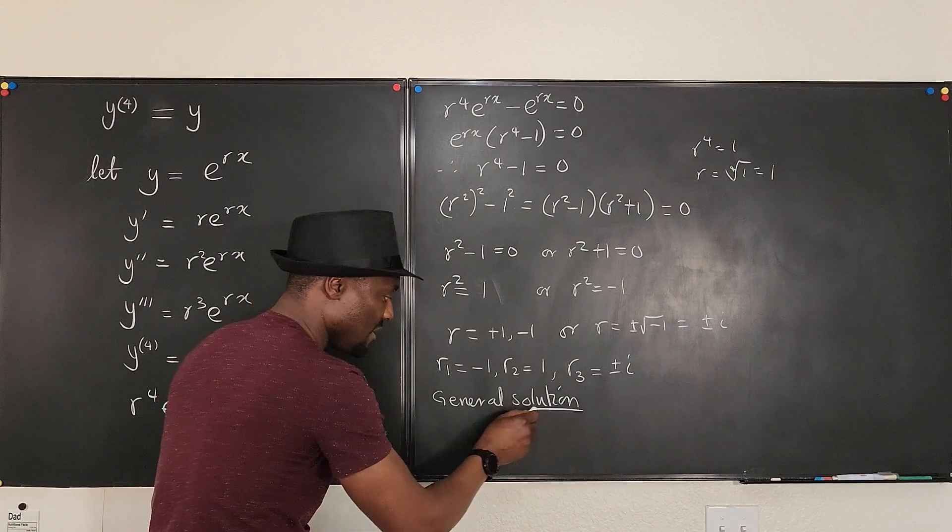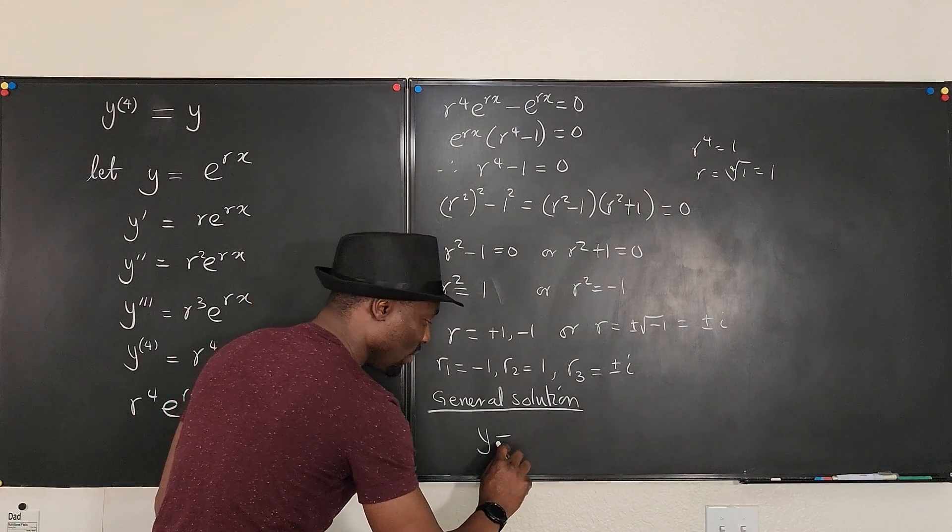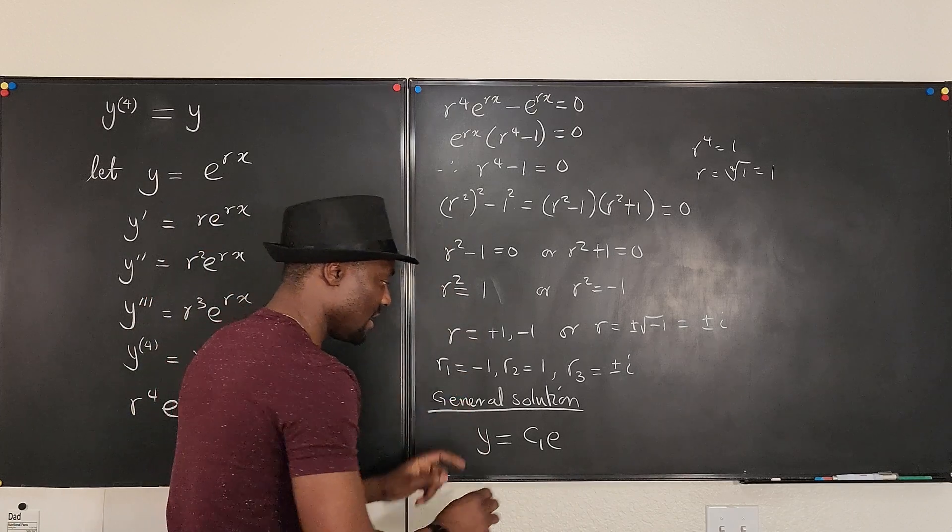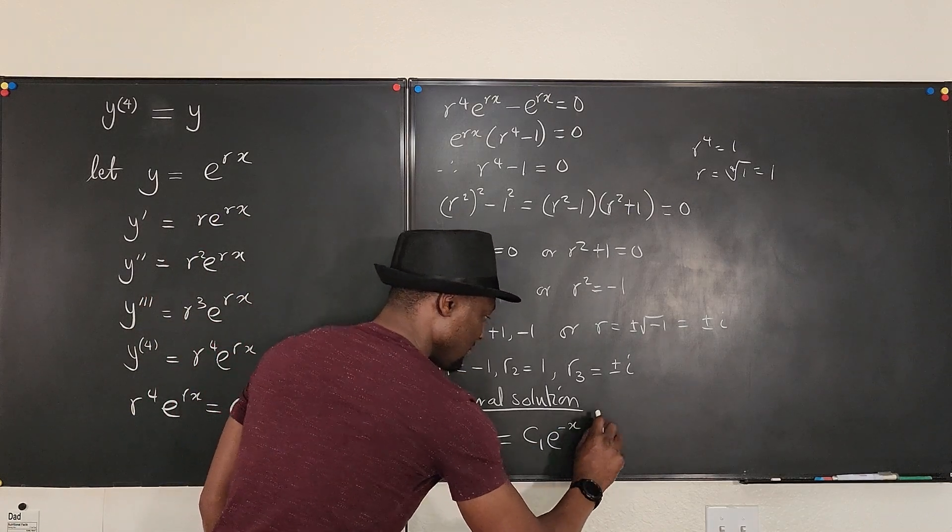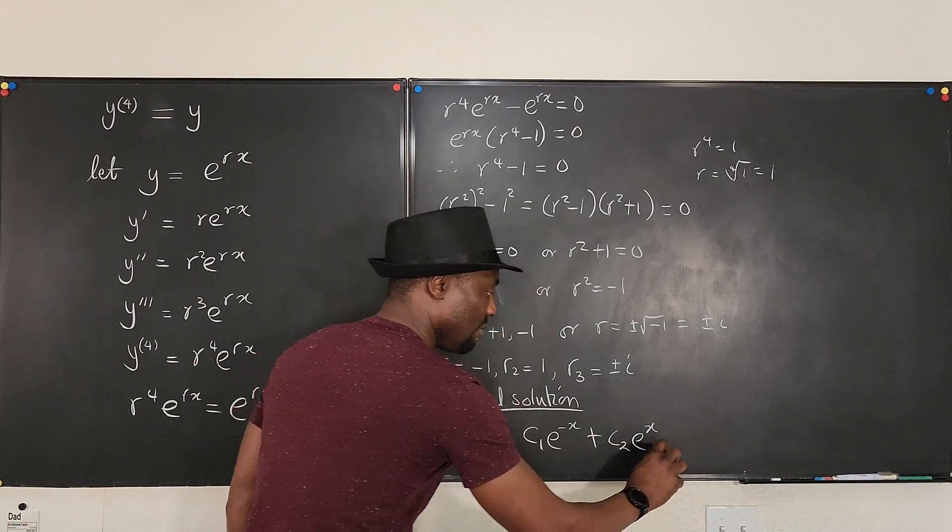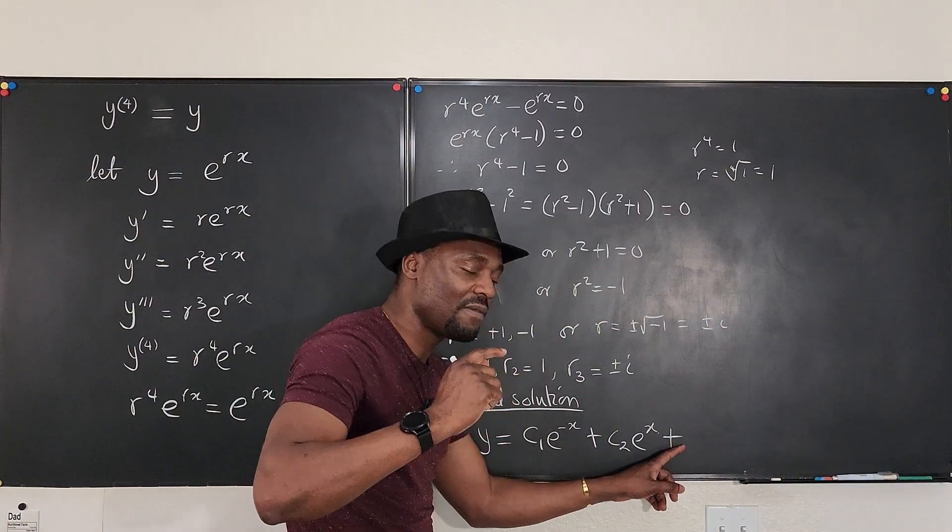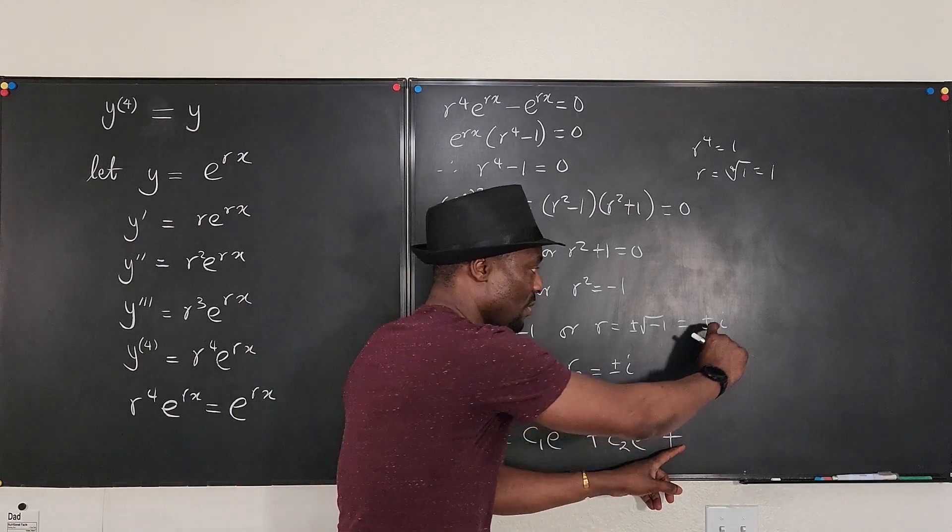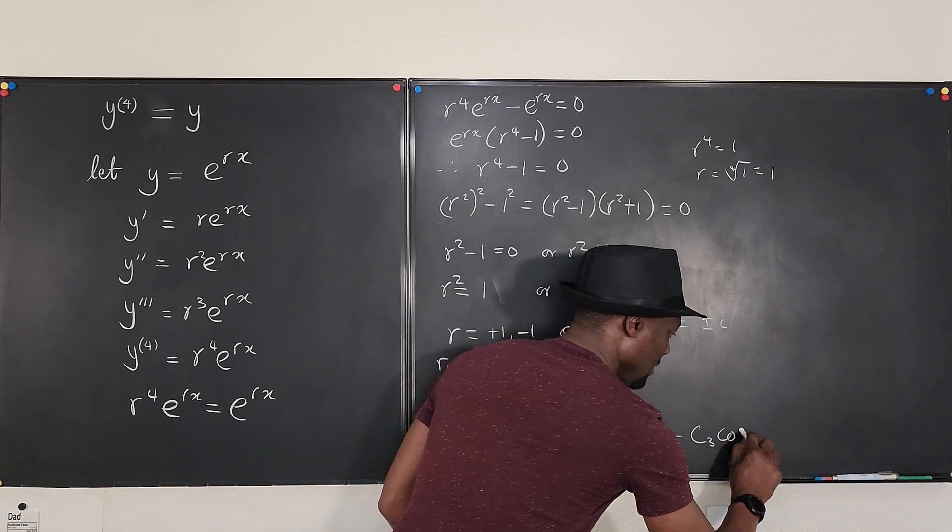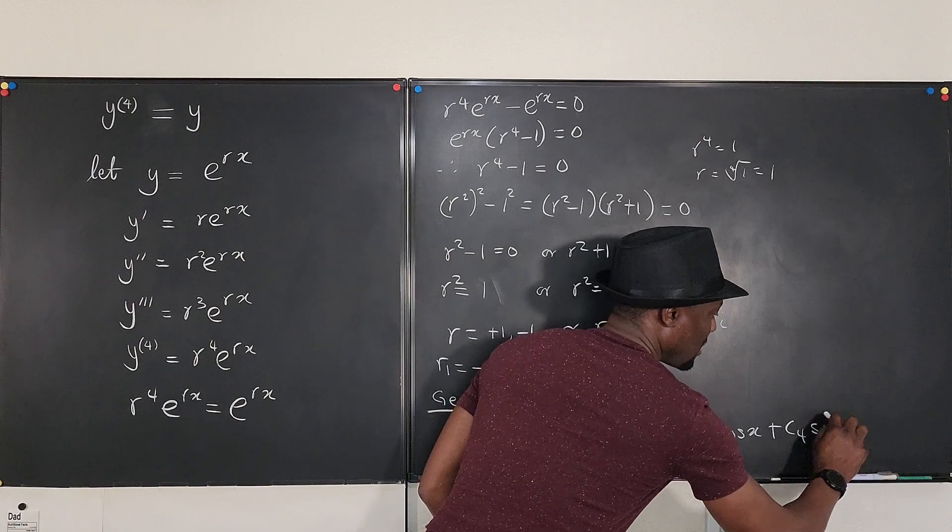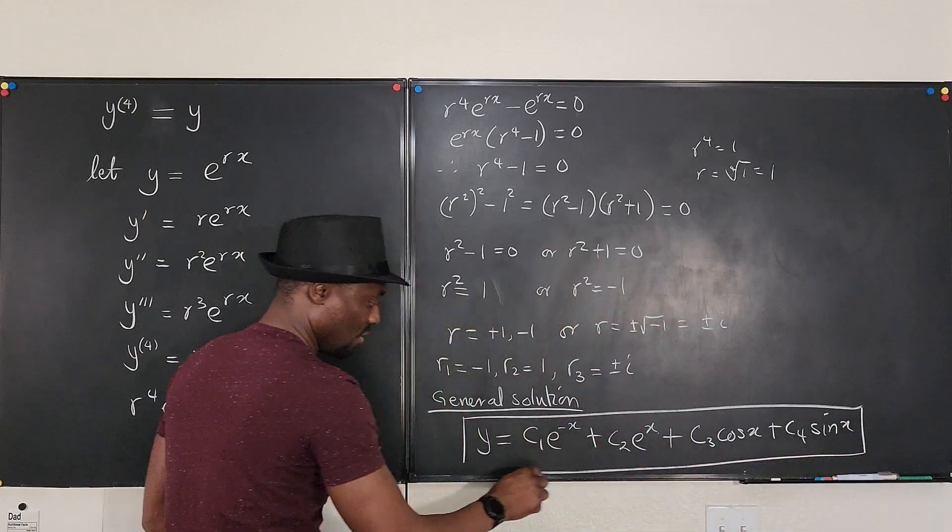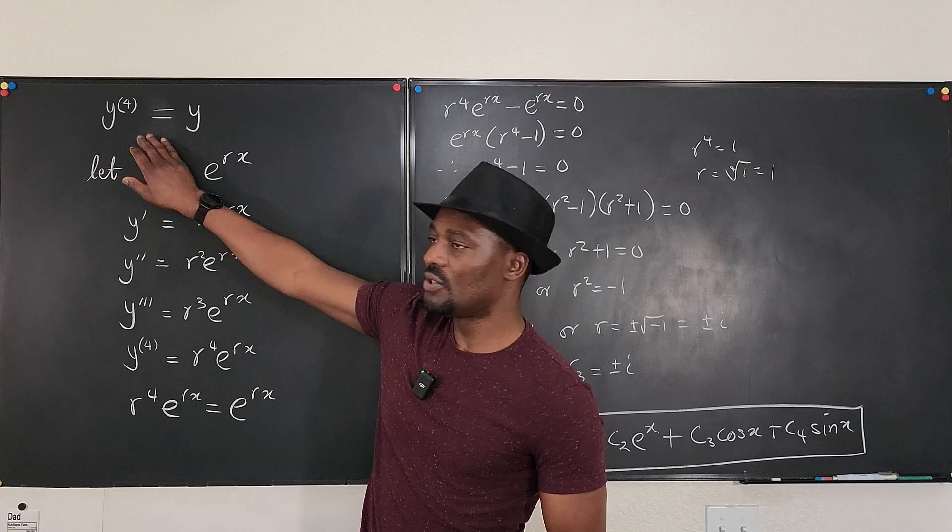So our general solution is going to be y is equal to the first one, c1 e to the negative one x plus c2 e to the x plus. And remember that whenever we have complex roots, we know that it's always a conjugate form. This gives us c3 cosine x plus c4 sine x. This is the general solution to this equation.